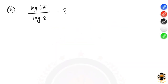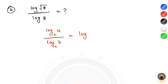Sixth question: log √8 divided by log 8. Using the change of base theorem: log_c(a) divided by log_c(b) equals log base b of a. So this equals log base 8 of √8.